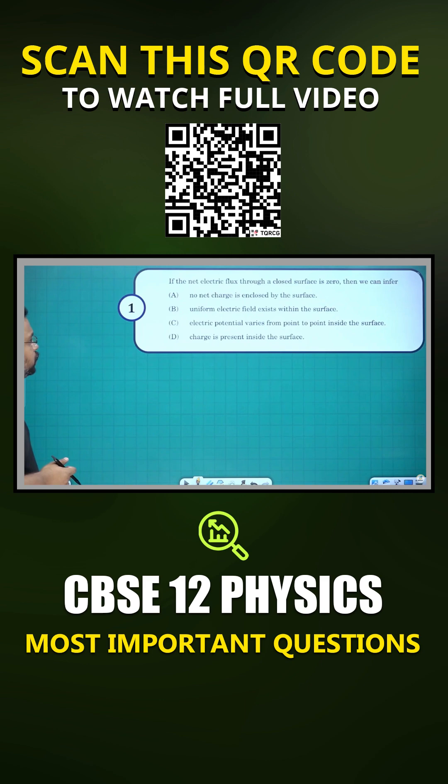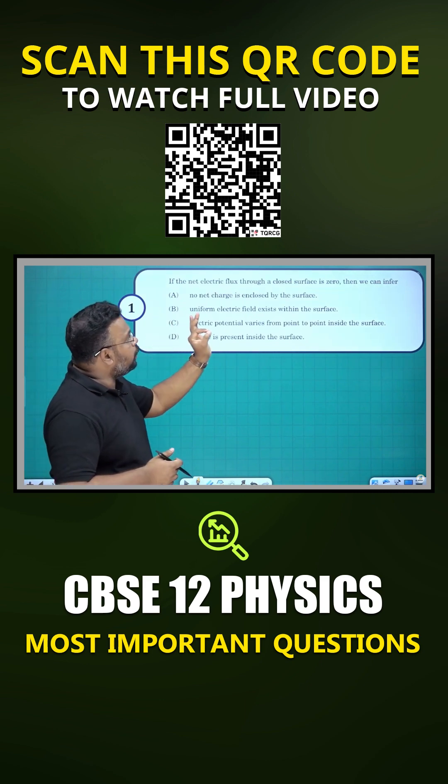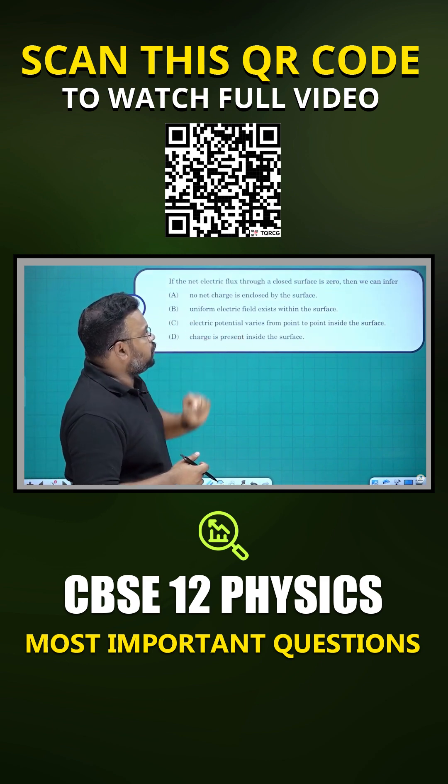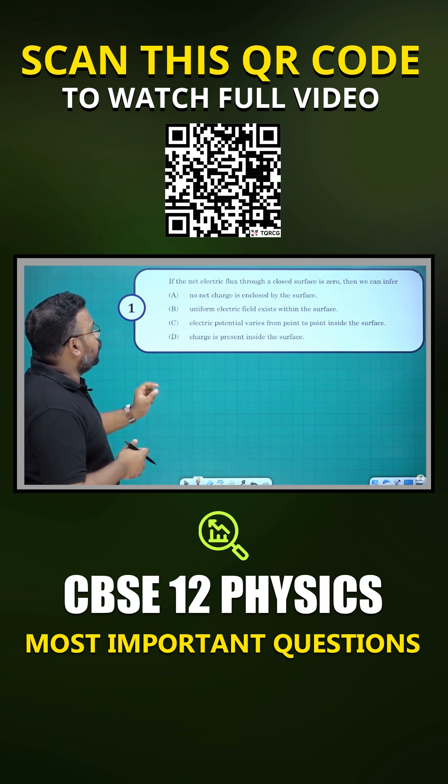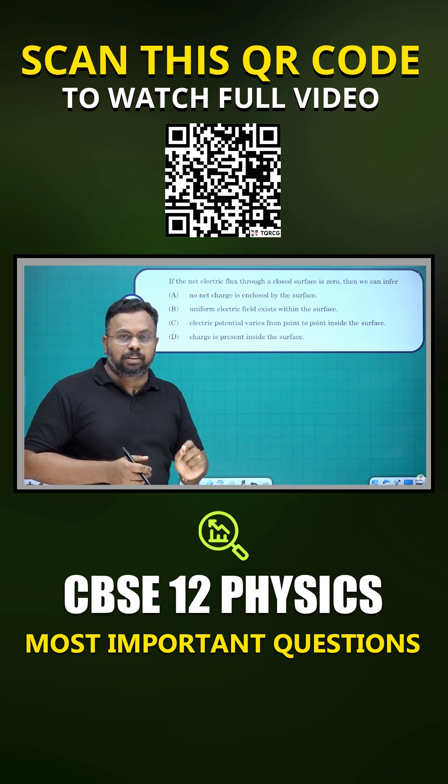So let's move on to the first question. If the net electric flux through a closed surface is zero, then we can infer: no net charge is enclosed by the surface, uniform electric field exists within the surface, electric potential varies from point to point inside the surface, or charge is present inside the surface.